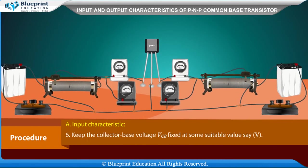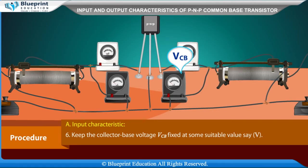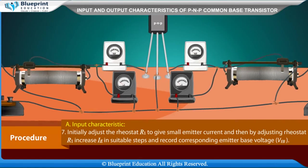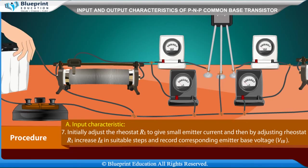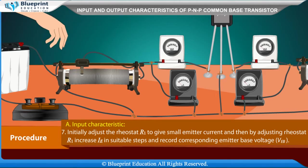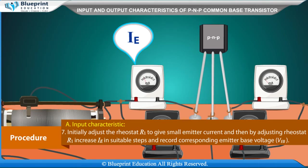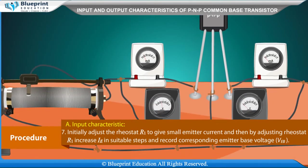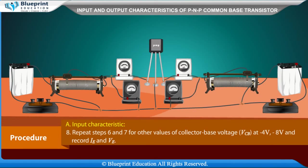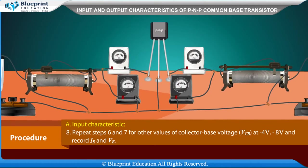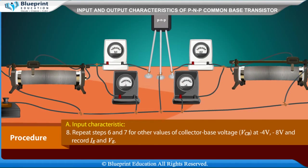Input Characteristic: Keep the collector-base voltage VCB fixed at a suitable value. Initially adjust rheostat R1 to give a small emitter current, then increase IE in suitable steps and record corresponding emitter-base voltage VEB. Repeat for other values of VCB at minus 4V and minus 8V, recording IE and VEB.